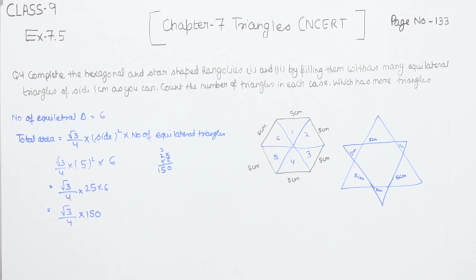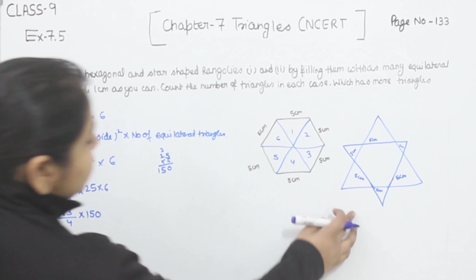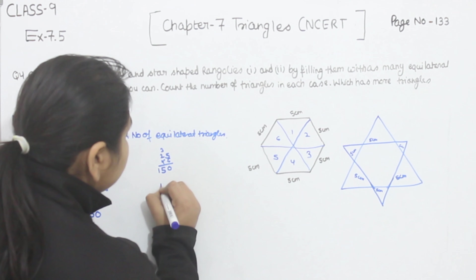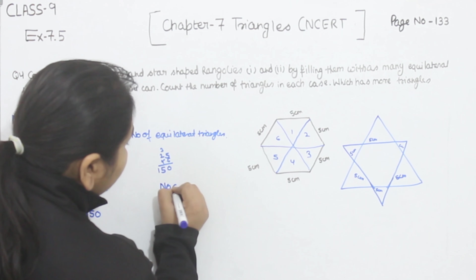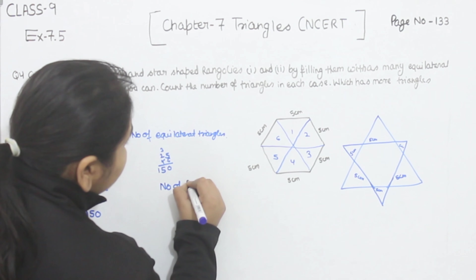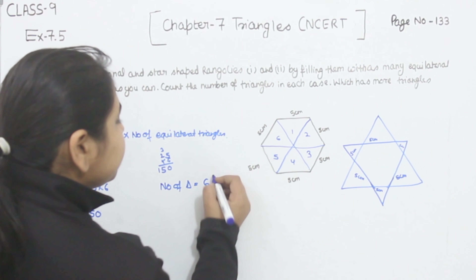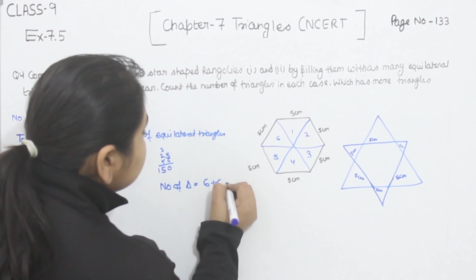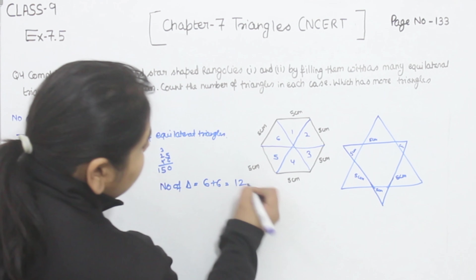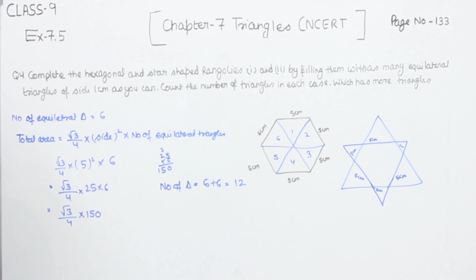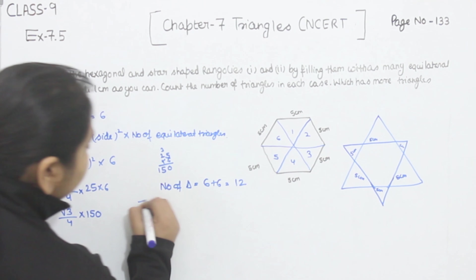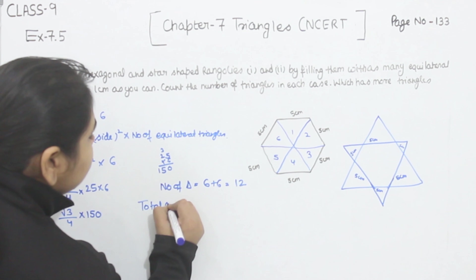Now we are going to find out the area of the star shape. In the star shape, the number of triangles we have is 6 plus 6, that is 12 equilateral triangles.